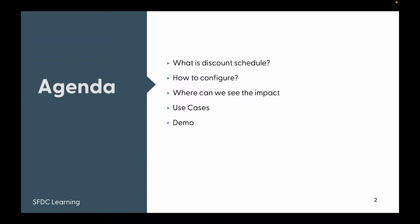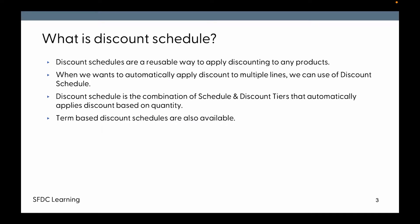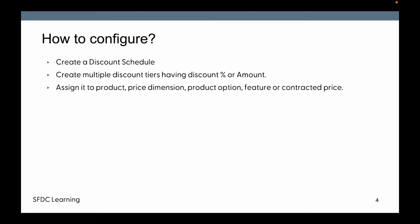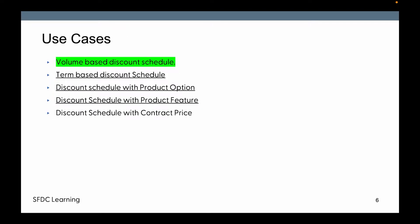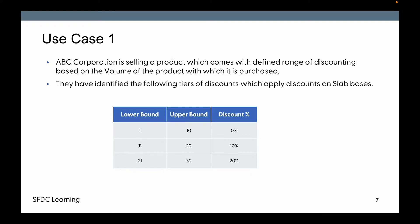Let's quickly run through the agenda, which remains the same as last time except the use case. Last time we saw what a discount schedule is, how to configure it, and where we can see the impact. Today we are going to learn how a term-based discount schedule can be defined, how to use the discount schedule on product option level, and how to apply it on product feature level. The last topic — discount schedule with contract pricing — will be covered separately.